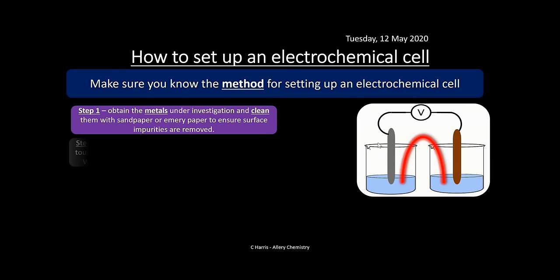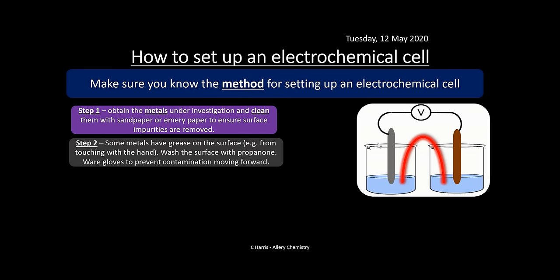The first step to set up an electrochemical cell is to obtain the metals under investigation and clean them with sandpaper or emery paper to remove surface impurities. Some metals have grease on the surface — for example from touching them with your hands — so we wash the surface with propanone and wear gloves to avoid contaminating the metal.